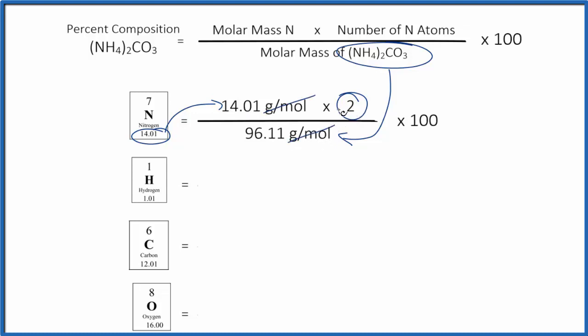14.01 times 2, we get that number, divide by the 96.11, and when we multiply by 100, that gives us our percent, 29.15%. And that's the percent composition by mass of the nitrogen in ammonium carbonate.